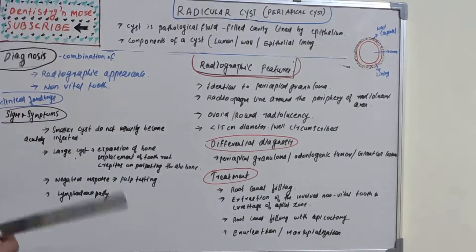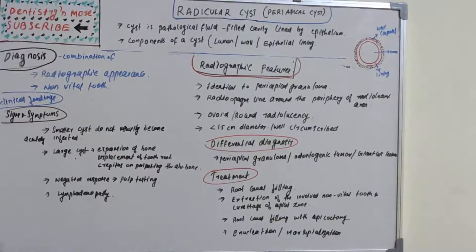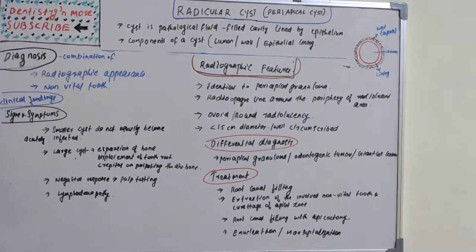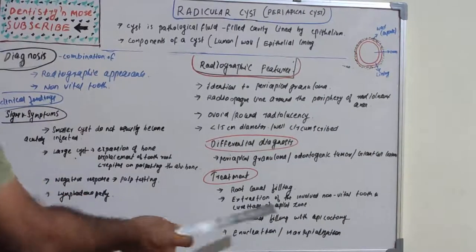Treatment options: most commonly we should do root canal filling. Extraction is also needed in few cases, extraction of non-vital tooth and curettage of the apical zone. If very much infected, root canal filling with apicoectomy. If not properly done, there is a chance for residual cyst.